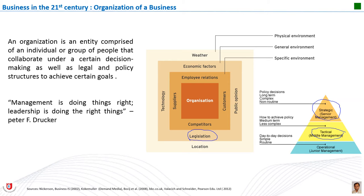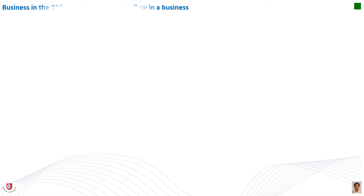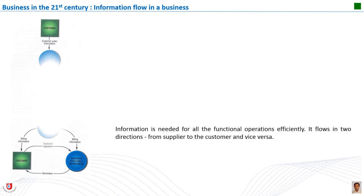Tactical decisions are medium-term, less complex decisions made by middle managers. They follow on from strategic decisions and aim to meet the objectives stated in any strategic decision — for example, in order to become the market leader, a firm may have to launch a new product or service or open new branches. Operational decisions are simple and routine decisions made by junior managers — this could involve the regular ordering of supplies or the creation of a staff schedule.